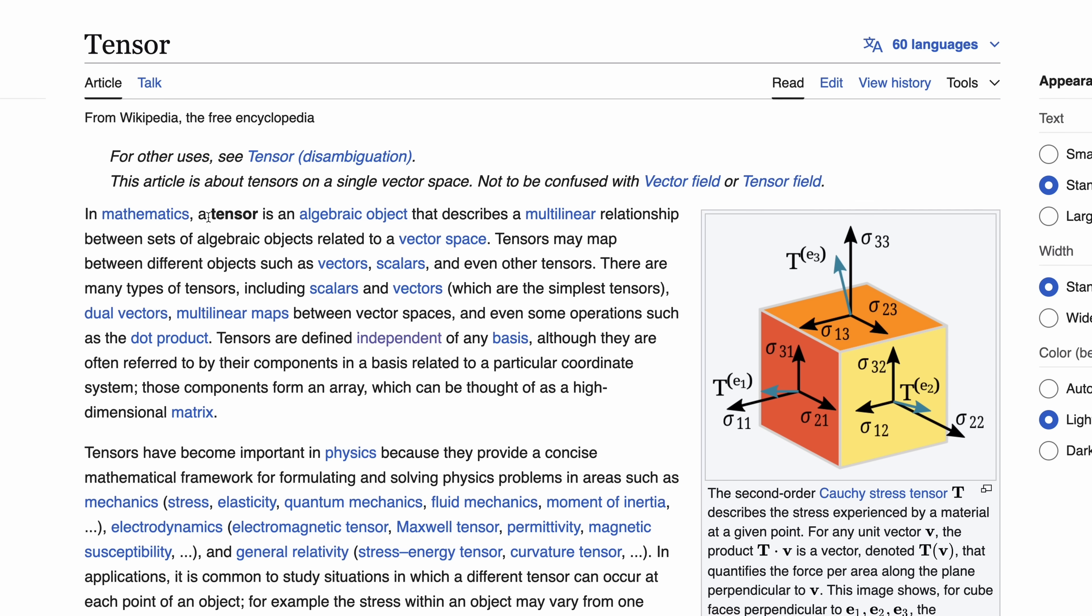Okay, so according to our brother's mathematicians, a tensor is an algebraic object that describes a multilinear relationship between sets of algebraic objects related to a vector space. Does it make sense? Let's find something more easy.